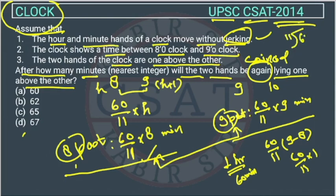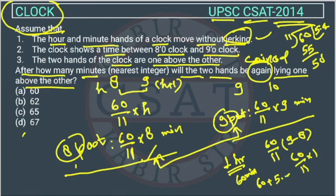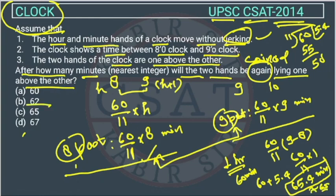Now divide this normally. This will go 5 times 55. Then we get 5 here, then again 0, then go 4. So this is 60 minutes and we are getting 5.4 minutes from here, making it 65.4 minutes. So they will coincide again after 65.4 minutes, which is equivalent to 65 minutes. The answer of this question is option C — they will coincide after 65 minutes.